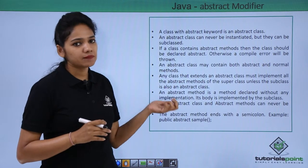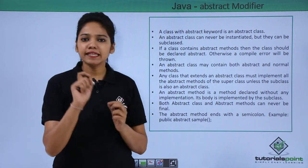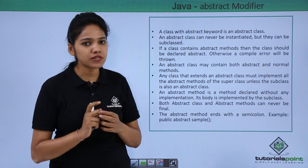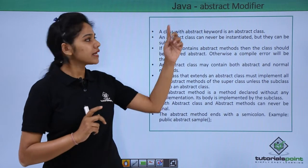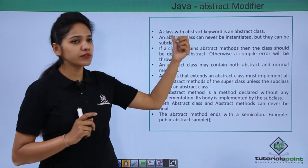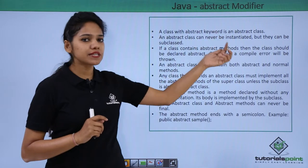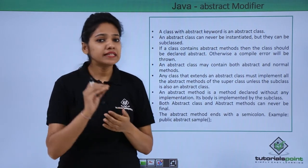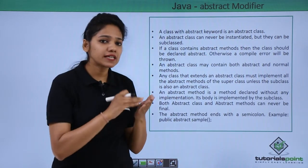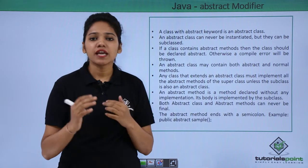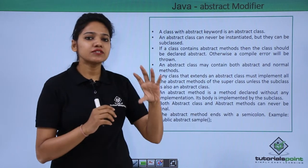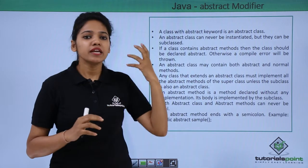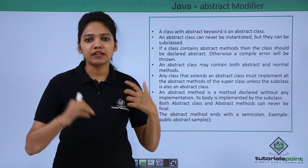So how do you create an abstract class? Any class preceded with the keyword 'abstract' becomes an abstract class. A class with the abstract keyword is an abstract class, and these abstract classes are not instantiated. As discussed in our example, it is just an outline — we are not defining it, so it is not instantiated.